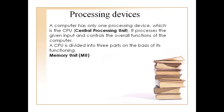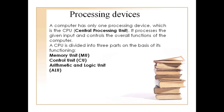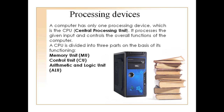The CPU is made up of three parts. The first part is the Memory Unit — it stores all the data and instructions temporarily or permanently. The second part of the CPU is the Control Unit. This controls the functioning of all the parts of a computer. This unit does not process or store data.